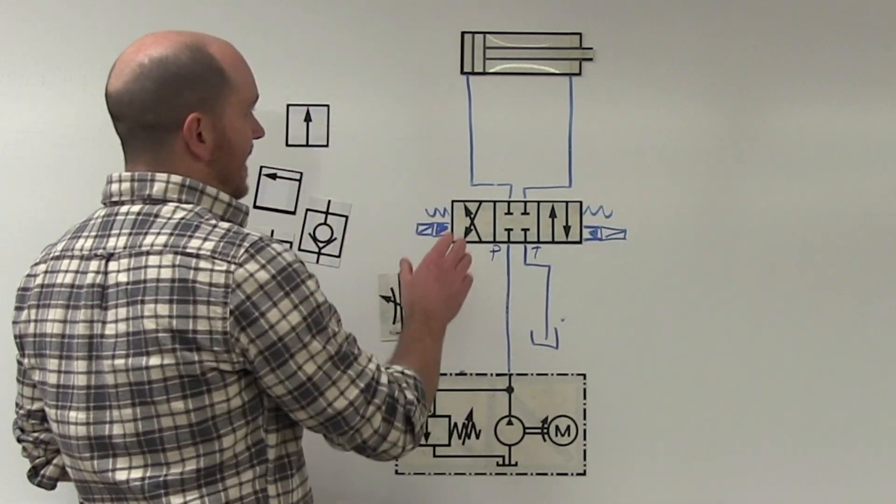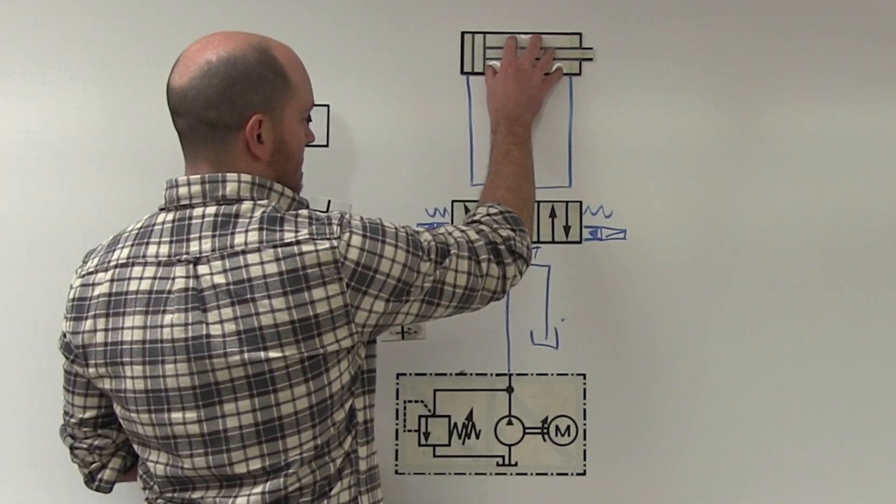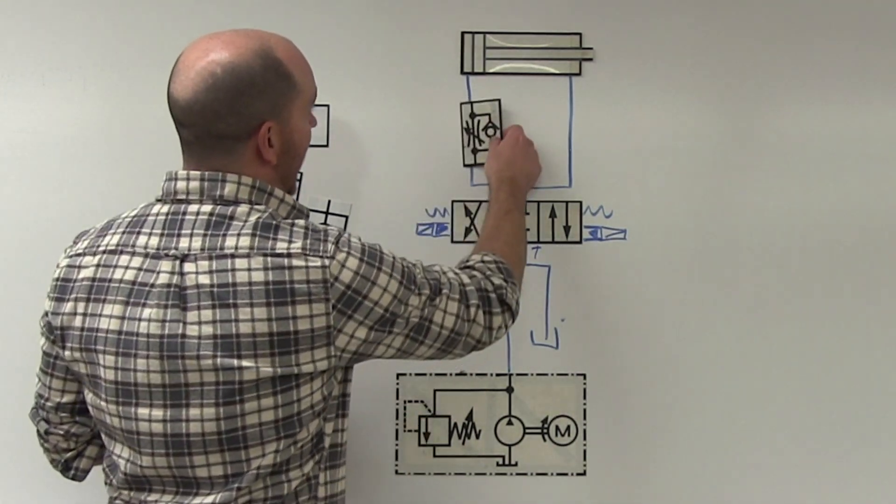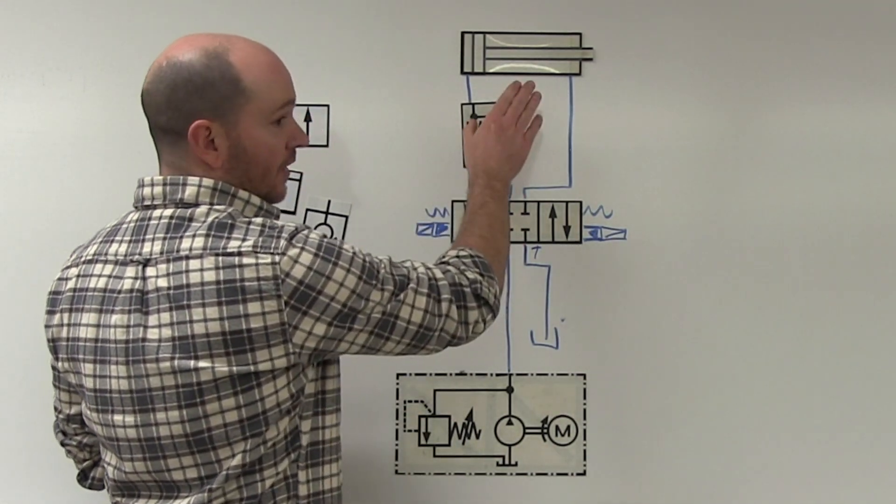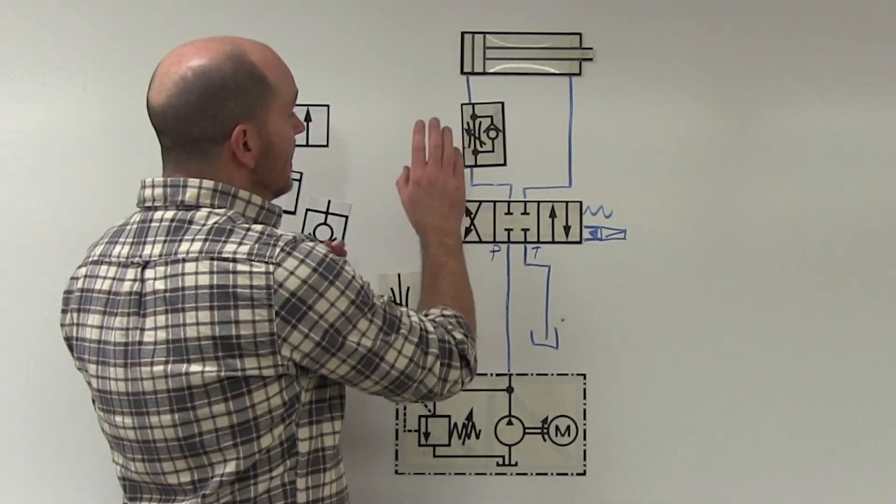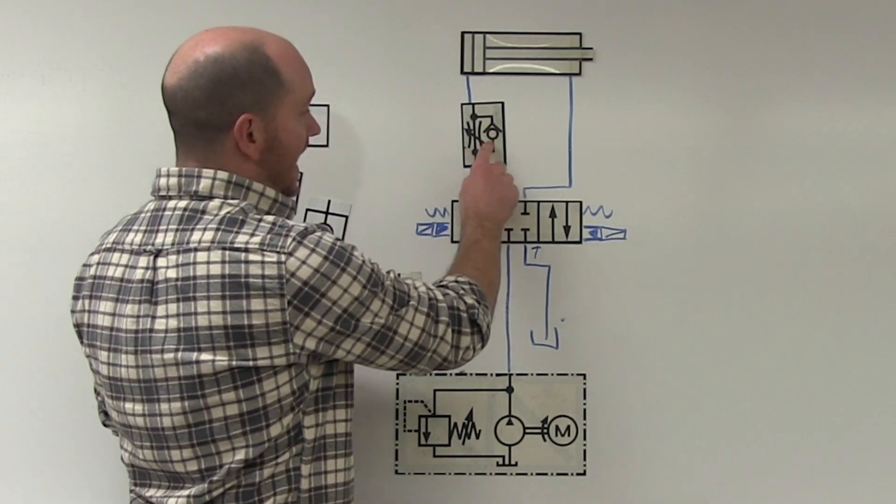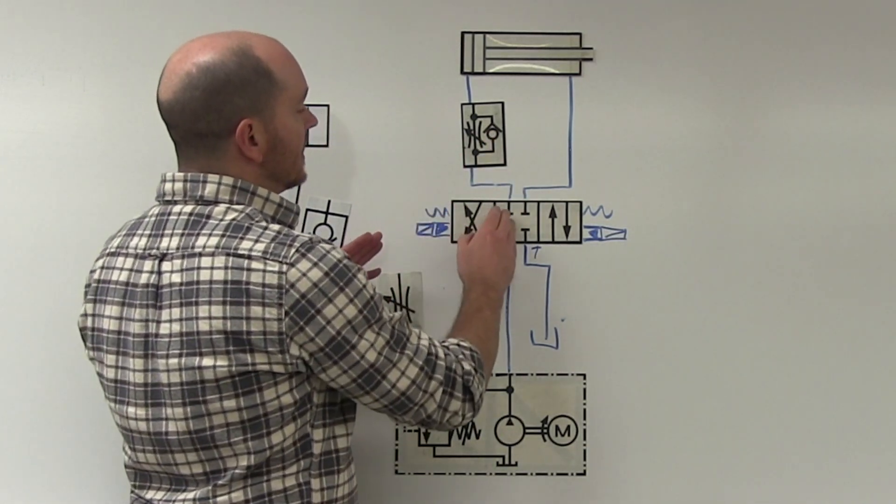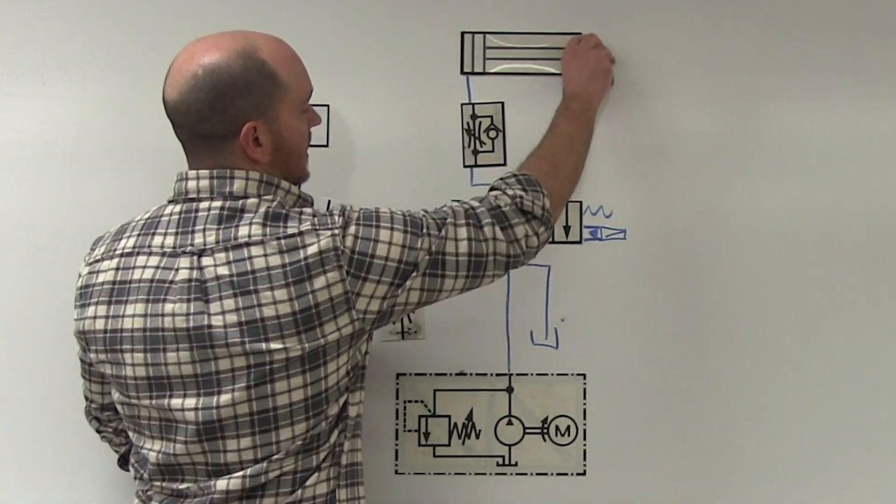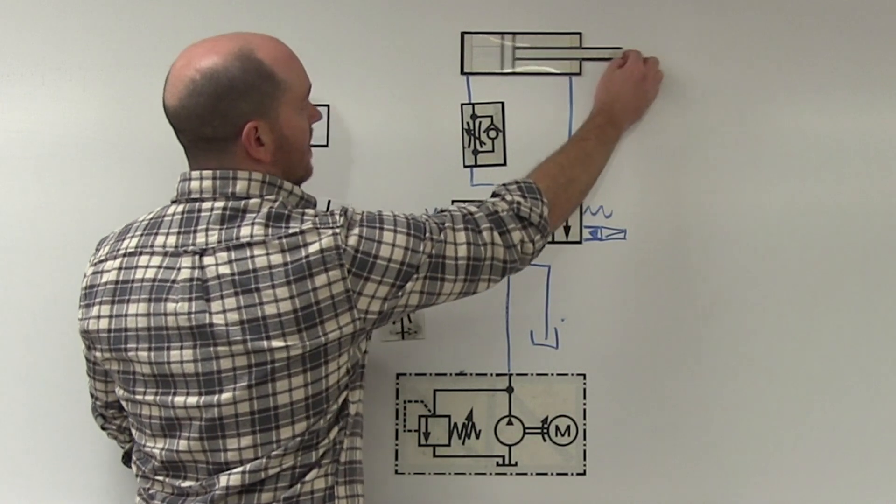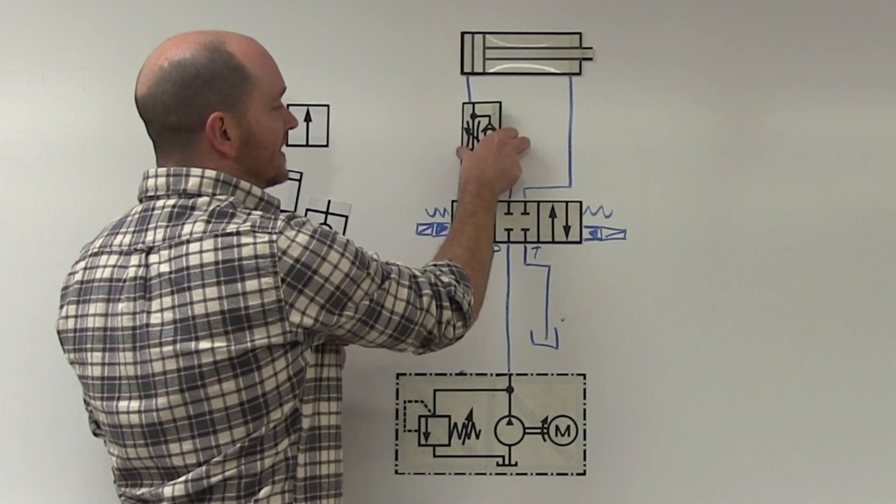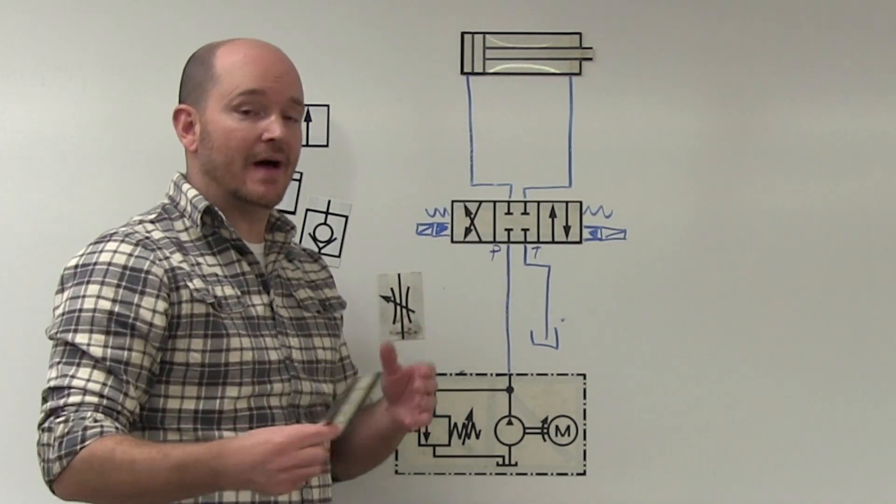But when do we need a bypass check valve after this? Well, I have a number of videos about how we actually meter in the flow, which I'll link at the end of this video. But you'll notice here that we need a bypass check valve for flow control, because we want to control the flow in only one direction. So oil will come up here, it will be restricted, but it will come back fast because it can go through the bypass check valve.